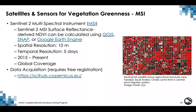Vegetation indices can be calculated from the multispectral instrument flown on Sentinel-2A and 2B using QGIS, SNAP, Google Earth Engine, or other image processing software. The spatial resolution of vegetation products from MSI is 10 meters, the temporal resolution is 5 days with both satellites, and the Sentinels provide global coverage from 2015 to present.